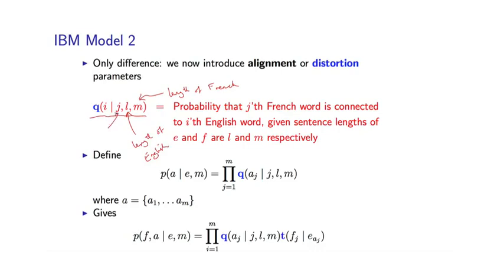J is the index of the French word, and I is the index of the English word. Let me give you an example — come back to this example.